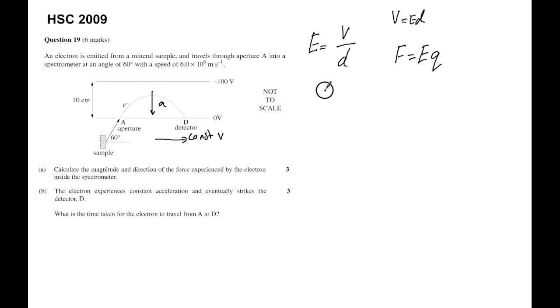In this case, our electric field is 100 volts over 0.1 meter. It's important that you understand that is in the correct SI unit, and we get an electric field strength of a thousand newtons per coulomb, or you could say volts per meter.